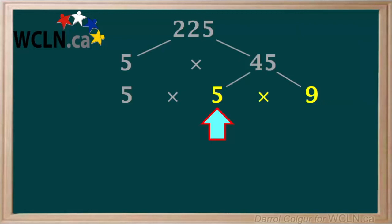Again, this 5 is also a prime number. But 9 is divisible. We can factor 9 into 3 times 3, which we'll write down here.